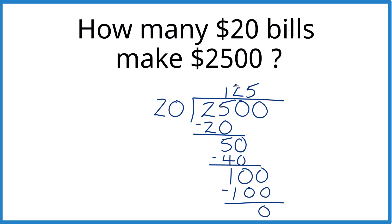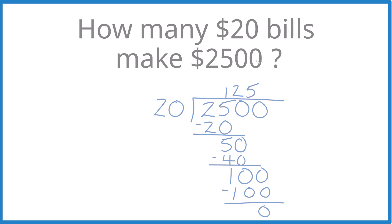So in answer to our question, you would have 125 of these $20 bills. That would make $2,500. So if you had $2,500 in your pocket, that would be 125 $20 bills.